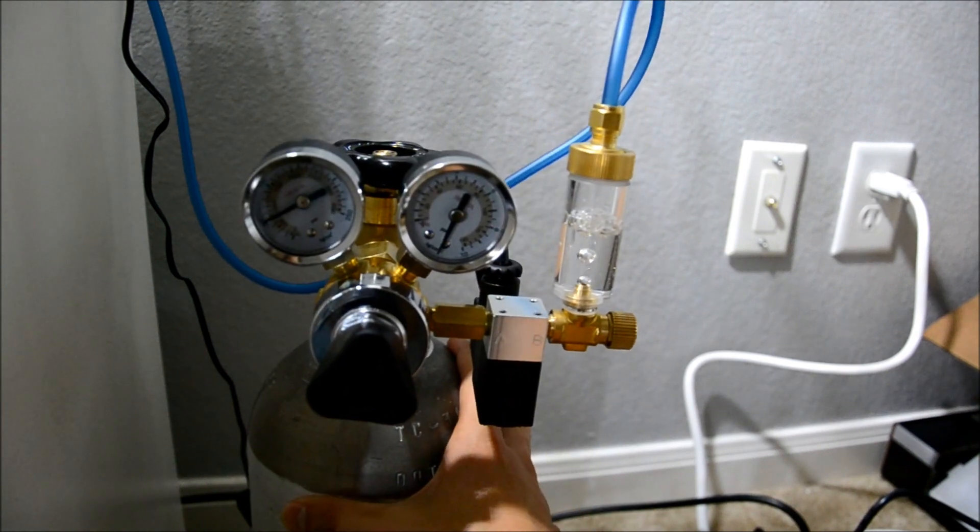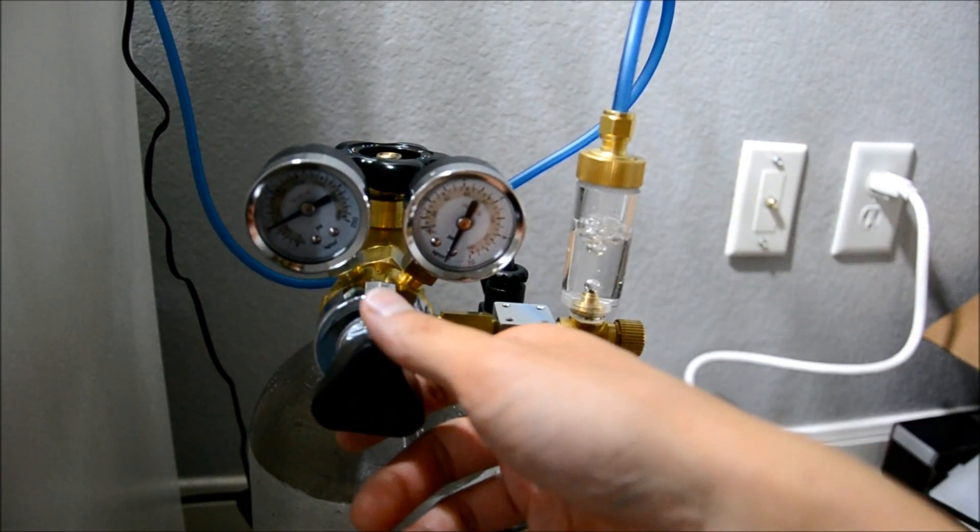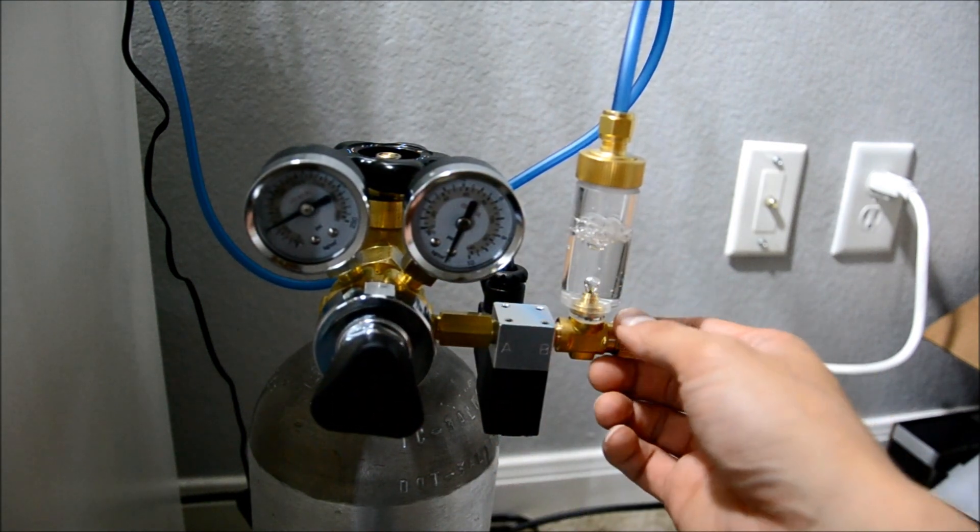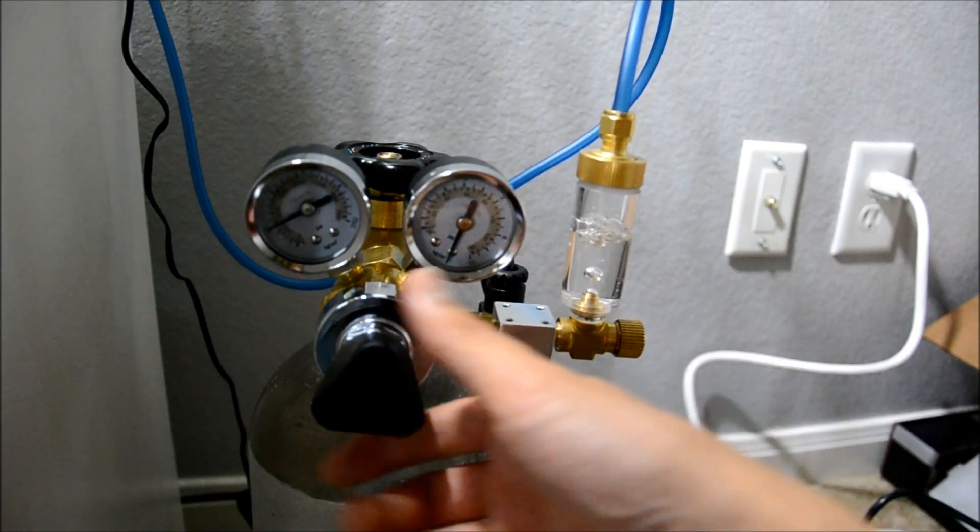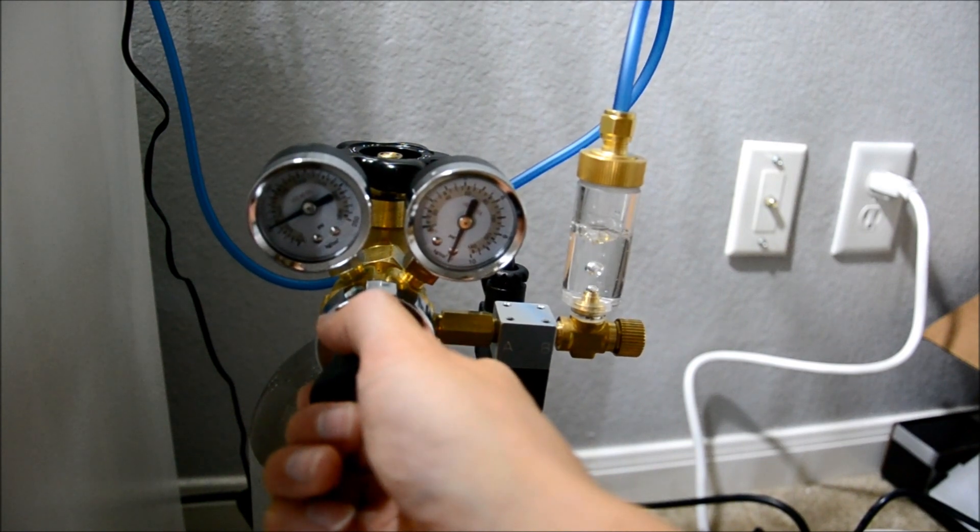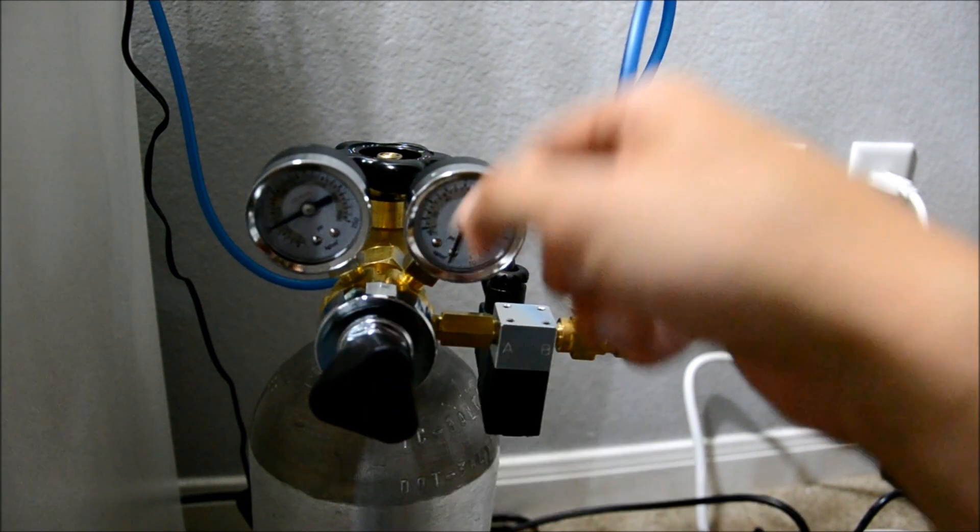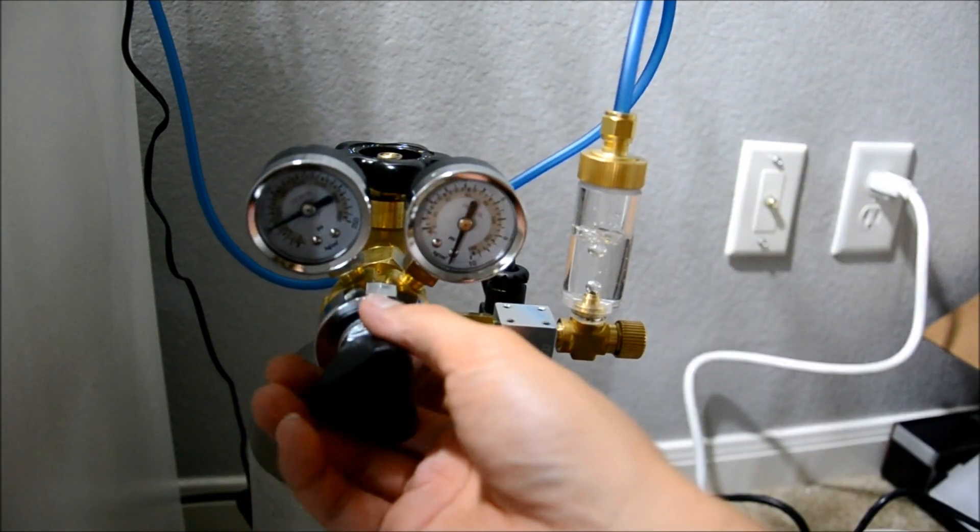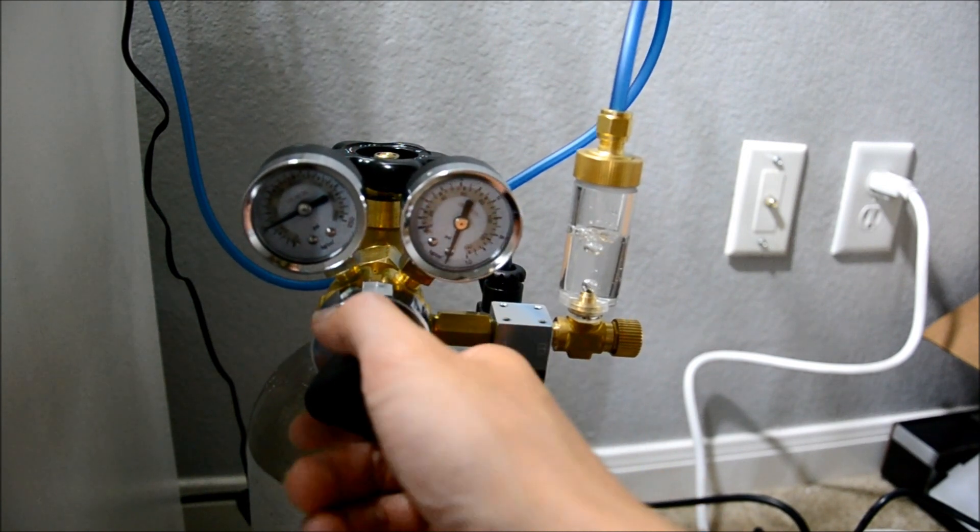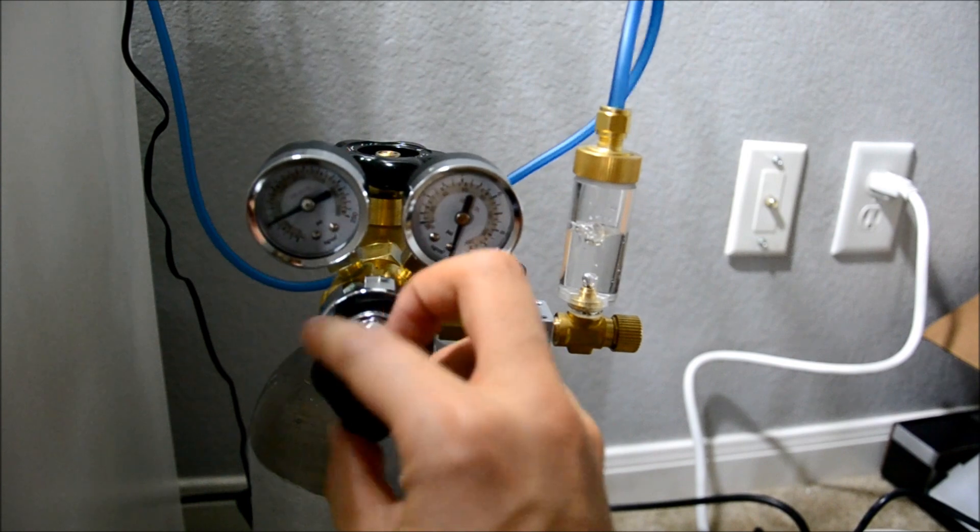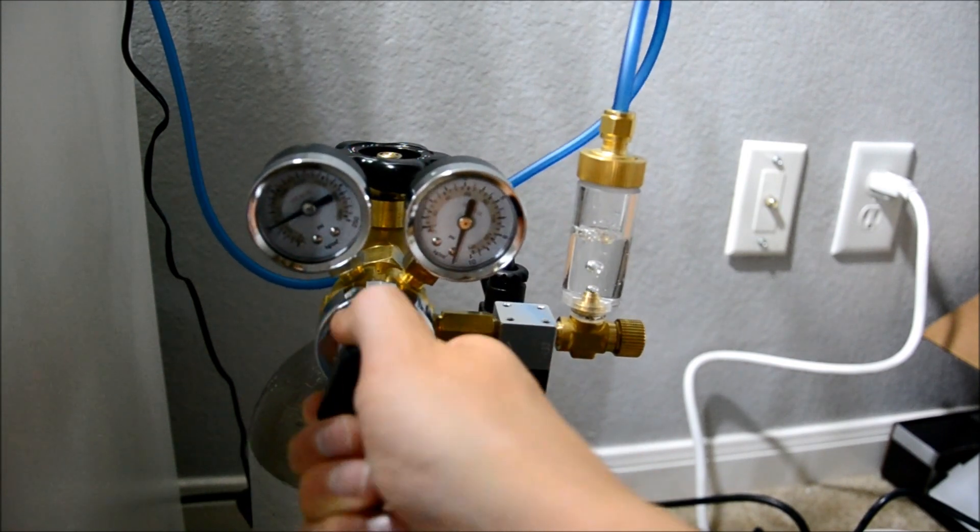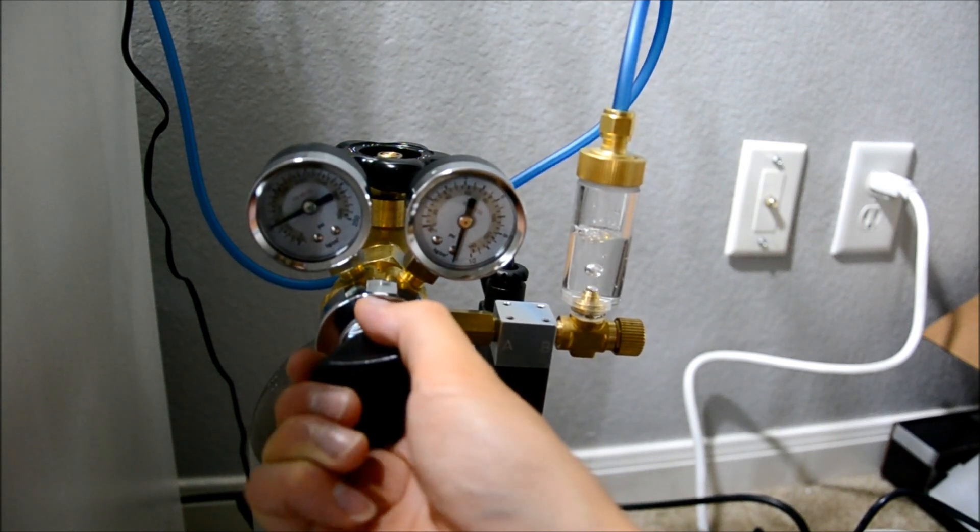Well anyways, getting back on with the setup. Here, as you increase this, you're basically putting more pressure, allowing more pressure to come from the tank. Usually you try to aim for 10 to 20 PSI. On here, since I can't really reach the gauge, if you loosen it a lot here, basically this will drop. So I'm just going to increase it a little bit.